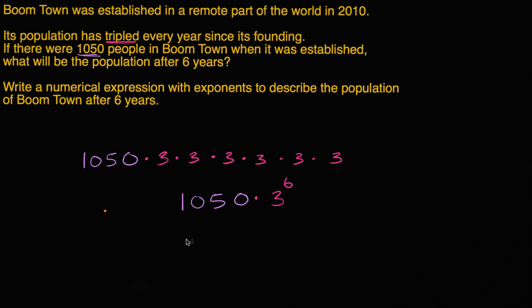Or, just as we just talked about, the initial population, 1,050 people, times three to the sixth power. And the whole point here is not to evaluate these things, but just to construct the expression. To know that we could evaluate this, and actually figure out the exact answer. But all they're asking us for is write a numerical expression with exponents to describe the population of Boomtown after six years. And we just did that.